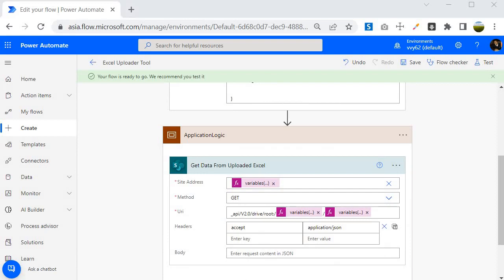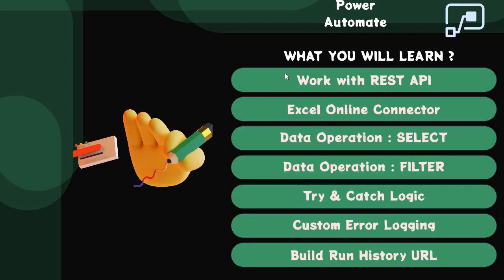So now we are done with this session. We have learned how to work with REST API using the Send HTTP Request action of the SharePoint connector. In the next session we will take this project further and look into how to use the Excel Online connector with the output given by this step — we will feed that output into the Excel Online connector. See you in the next session. Bye bye, take care.